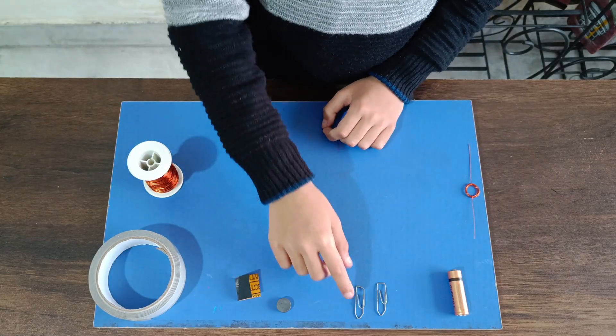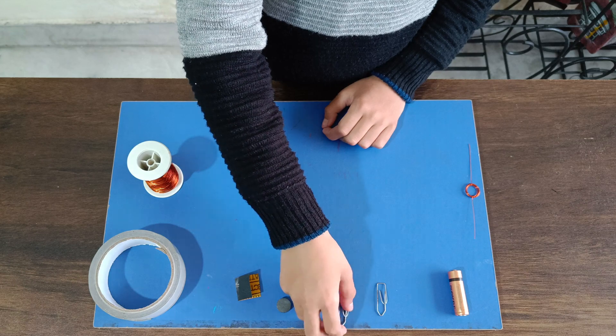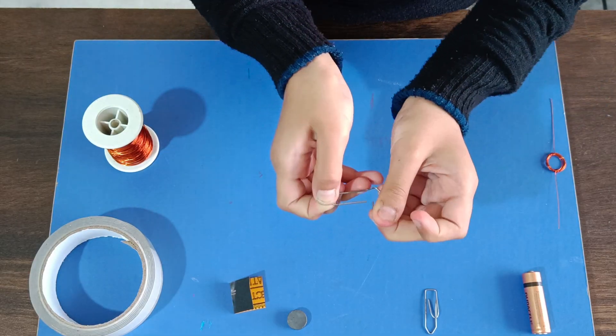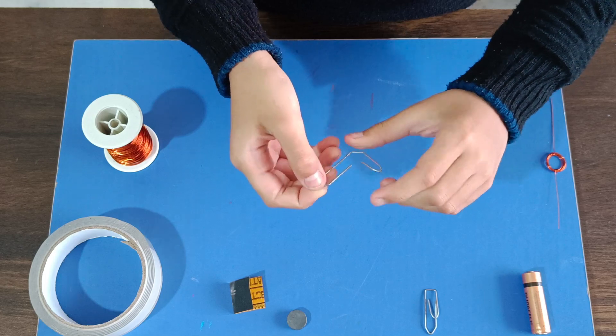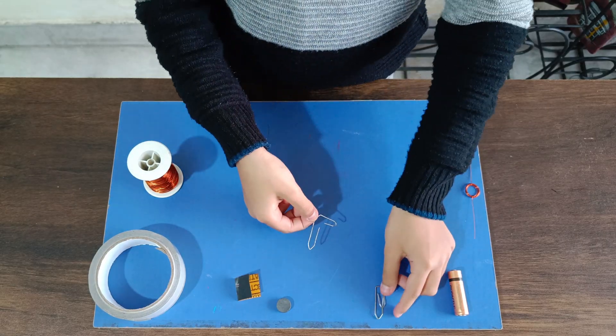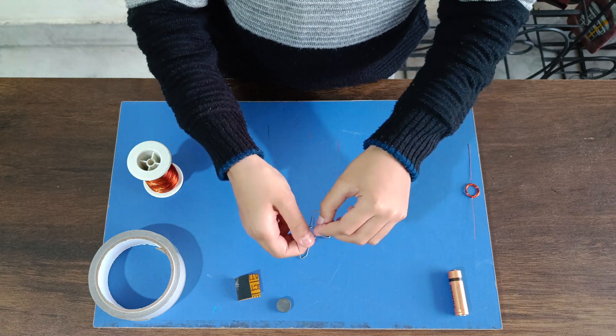Now we will take one of the metal paper clips and unfold it to make an L shape like this. We will do the same to the second clip also.